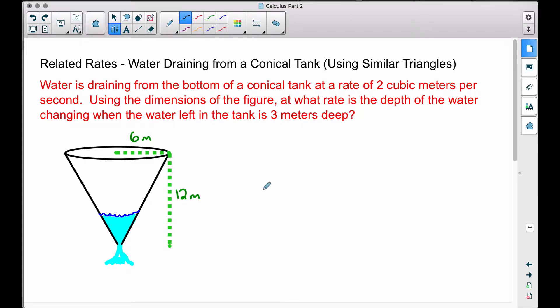We have this conical shaped water tank, and the rate at which the volume is changing is 2 cubic meters per second. The reason why it's volume is because we have cubic meters. Therefore, dV/dt, the rate of change of volume with respect to time, is negative 2 cubic meters per second. I used a negative 2 here because the water is draining, so the volume is decreasing inside of this conical tank.